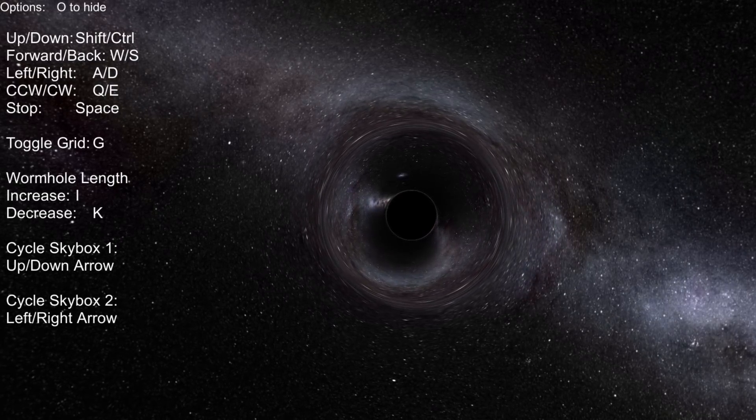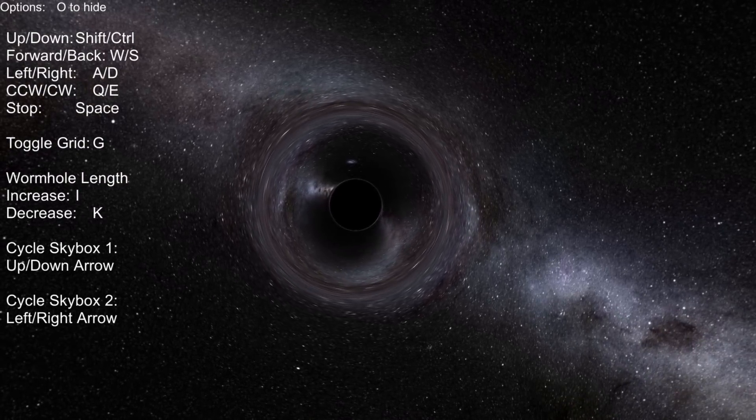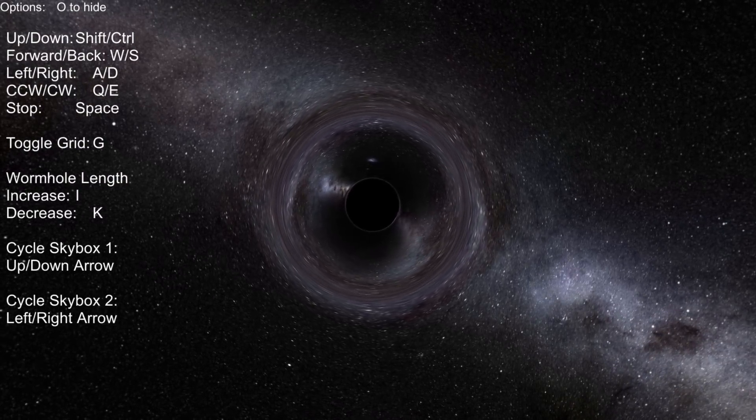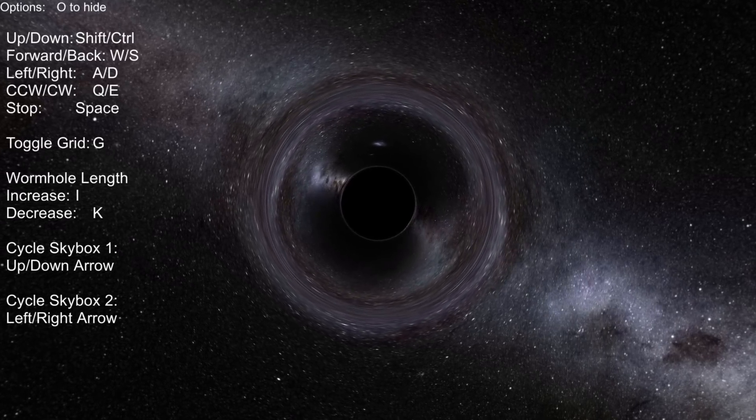As light passes closer and closer to a black hole, it starts to not only take an orbit like we would see with planets, but it starts to spiral multiple times as it gets closer and closer to the event horizon.